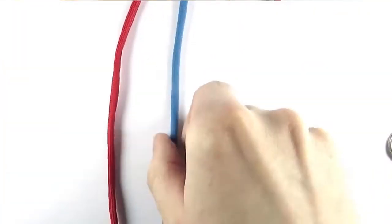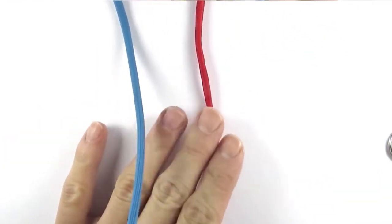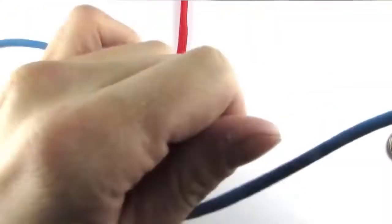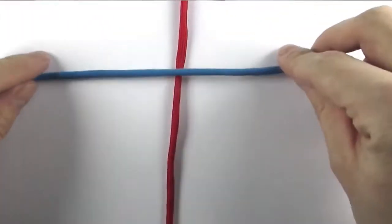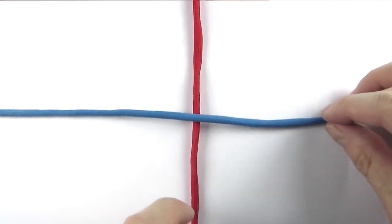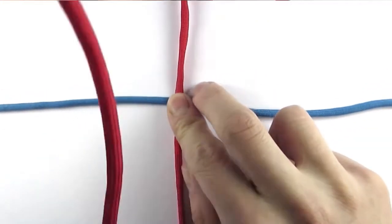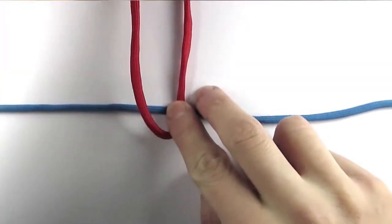The first thing we're going to do is we're going to cross our cords like we did in the tutorial, and then we're going to fold the bottom cord over the top one on both ends like this.